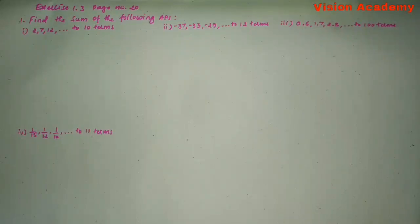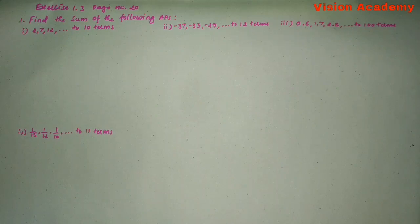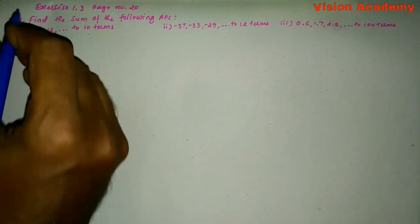In this video, we are going to solve exercise 1.3, question number 1: Find the sum of the following APs. First question: 2, 7, 12, so on, up to 10 terms.